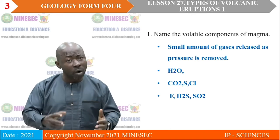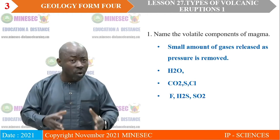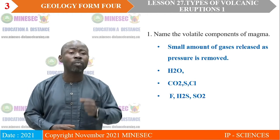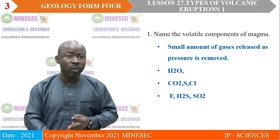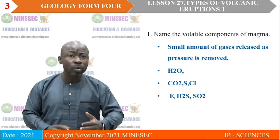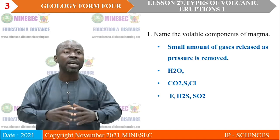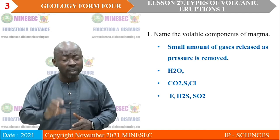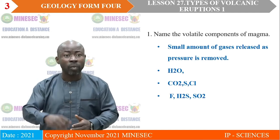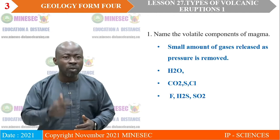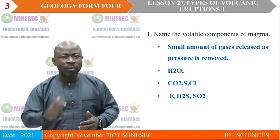We can also call them the gaseous components of magma. We know that magma has three components: the gaseous component, the solid component, and the liquid component. We wanted you to bring out just the gaseous or volatile component of magma, which includes water vapor, carbon dioxide, sulfur, chlorine, fluorine, hydrogen sulfide, and sulfur dioxide.